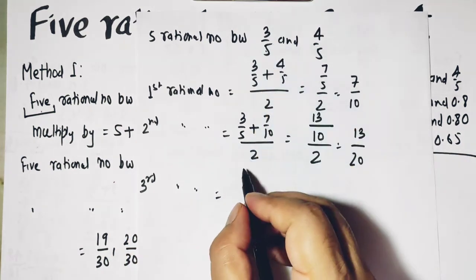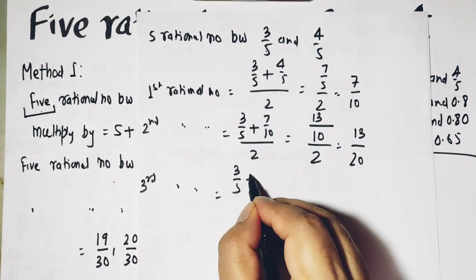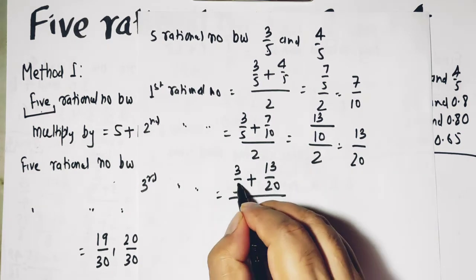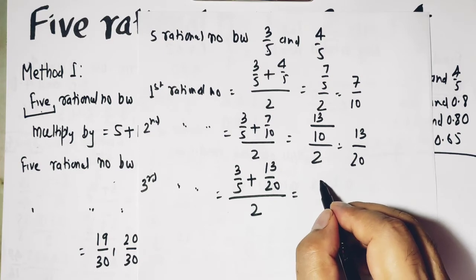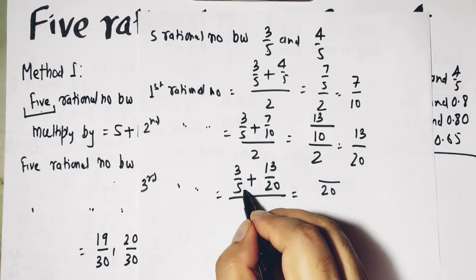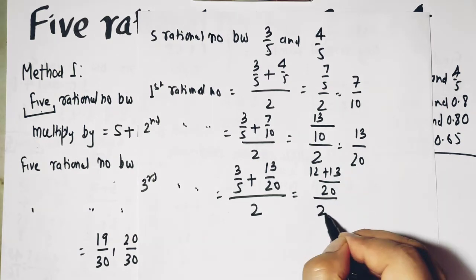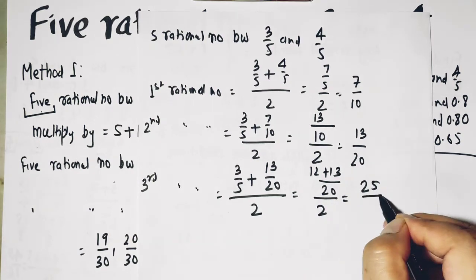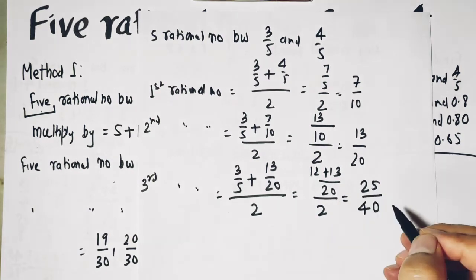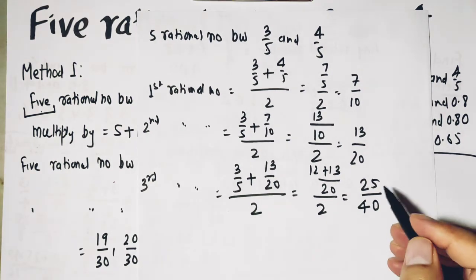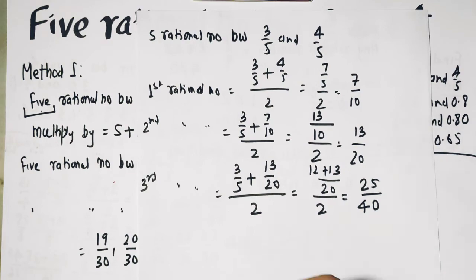Now we have to find the third rational number. Again take this number plus this number upon 2. So LCM is 20. 4 times 3 is 12 plus 13 upon 2. So it is 25 upon 40. If you want to simplify you can here, but let's continue this.